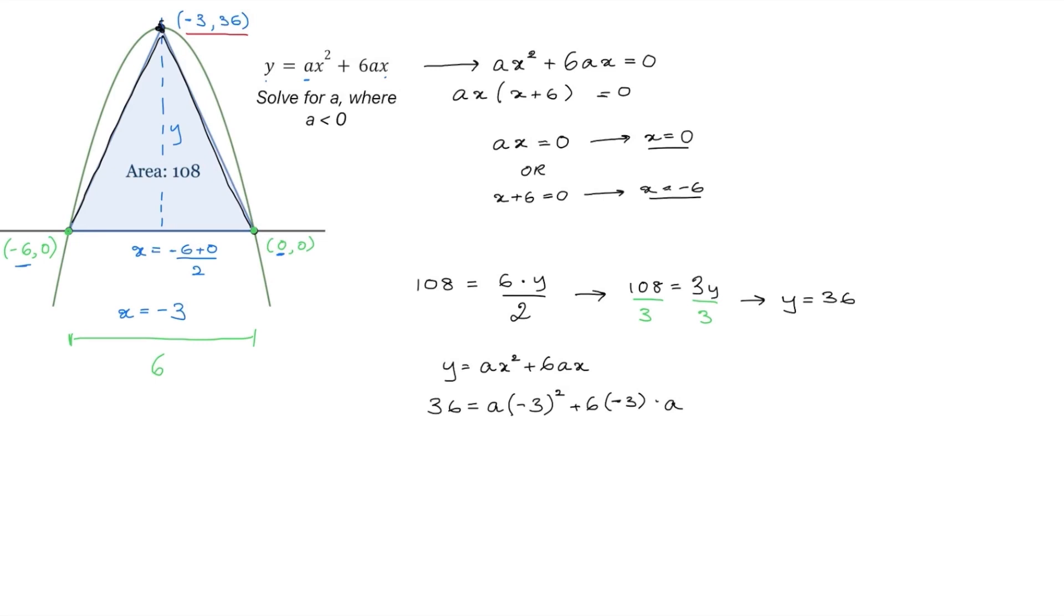Now when we simplify this equation we get 36 equals 9a minus 18a, and the right hand side simplifies to negative 9a. And finally when we divide both sides by negative 9, we get that a is equal to negative 4.